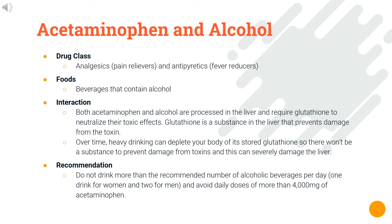Acetaminophen is an analgesic and antipyretic. Both acetaminophen and alcohol are processed in the liver and require glutathione to neutralize their toxic effects. Heavy drinking over time can deplete the body's stored glutathione, leaving no protection against these toxins and severely damaging the liver. We recommend not drinking more than the recommended number of alcoholic beverages per day — one drink for women and two for men — and avoiding daily doses of more than 4,000 mg of acetaminophen.